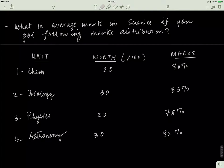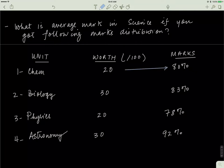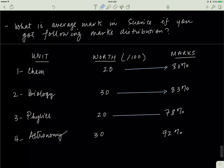Now let's move on to a second example, because expectation values and the first moment of distribution can help you calculate your university GPA and grades. Let's say you took a science class with four units: chemistry, biology, physics, and astronomy. Out of 100, the first unit is worth 20 marks, the second is worth 30, the third is worth 20, and the fourth is worth 30. In chemistry you score 80%, in biology 83%, in physics 78%, and in astronomy 92%.